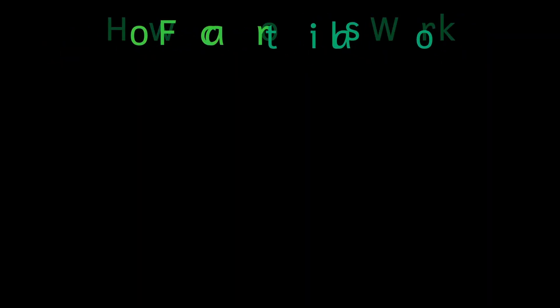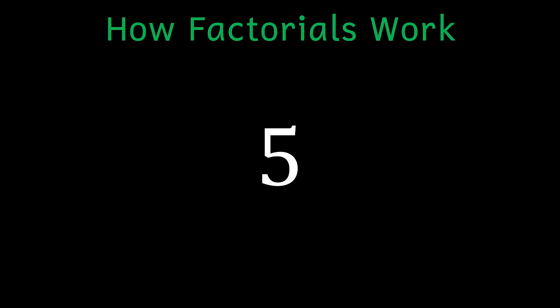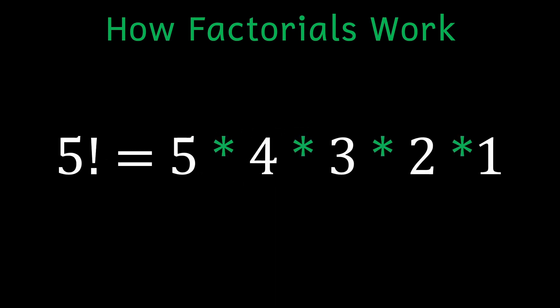To illustrate what it does, let's look at an example. Take the number five. The factorial of the number five is the multiplication of all the numbers up to and including five.